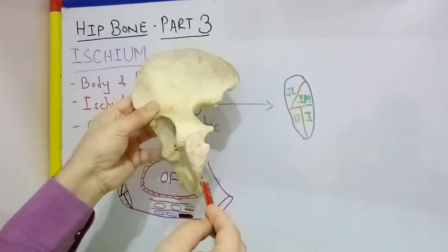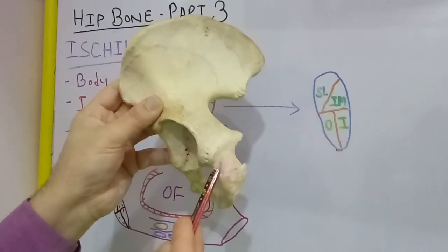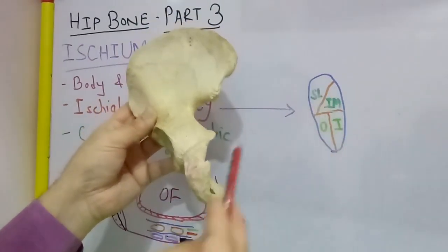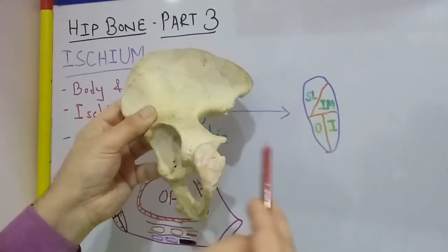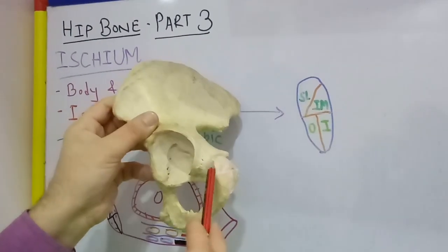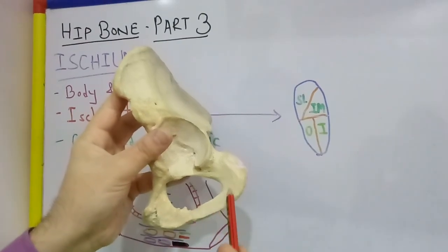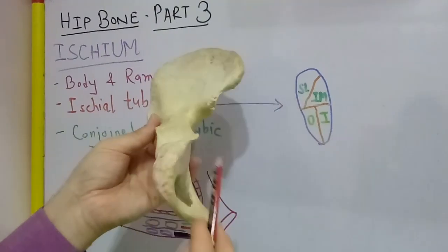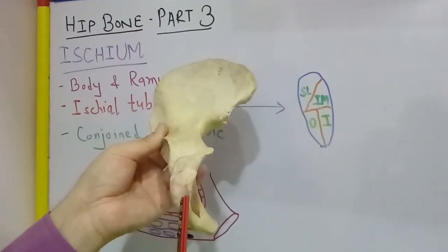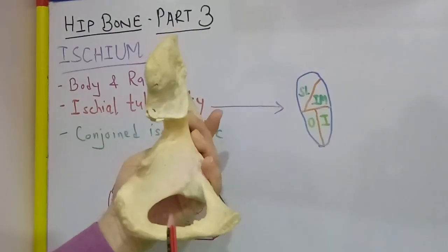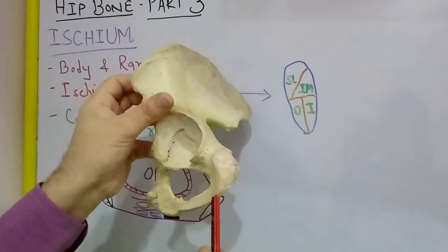Coming to the attachments on the ischial tuberosity: the superolateral part gives origin to semimembranosus muscle, whereas the inferomedial part gives origin to semitendinosus muscle and the long head of biceps femoris muscle. The outer lower part gives origin to the hamstring part of adductor magnus muscle, whereas the adductor part of adductor magnus comes from the ramus of ischium. The inner lower part is covered with fibro-fatty tissue which supports the body weight in the sitting position. The medial margin of the ischial tuberosity gives attachment to the sacrotuberous ligament, whereas the lateral margin gives attachment to the ischiofemoral ligament.